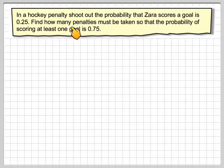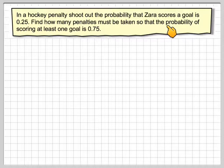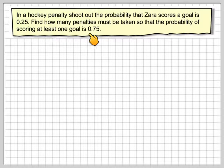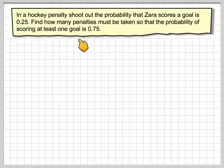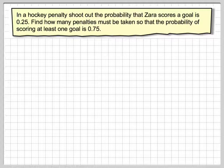In a hockey penalty shootout, the probability that Zara scores a goal is 0.25. Find how many penalties must be taken so the probability of scoring at least one goal is 0.75.